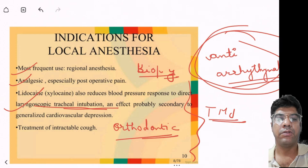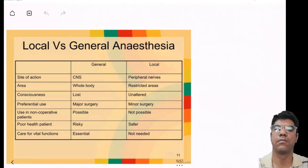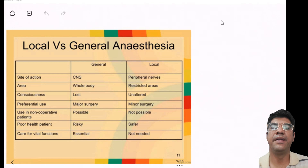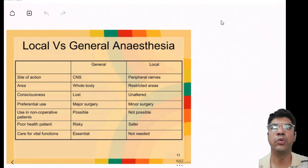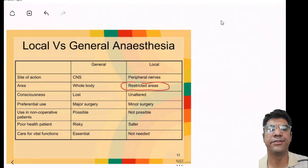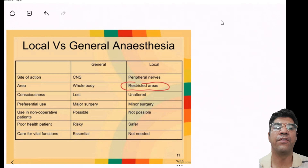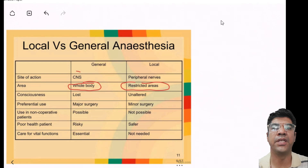Those are the indications for local anesthesia. Now let us discuss the differences between local anesthesia and general anesthesia. Local anesthesia is used to numb a restricted, specific area of the body, like a small section of skin or a localized area where the procedure will take place. Whereas general anesthesia includes a stage of unconsciousness and complete lack of sensation throughout the entire body. The site of action of general anesthesia is the central nervous system, whereas local anesthesia affects the peripheral nerves.